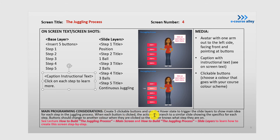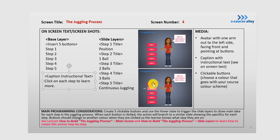When a button is clicked, the action will branch to a similar slide showing the specifics for each step. Buttons should change to another color when they are clicked, so the learner knows what step they're on. When they click on, for example, step one, it'll branch to the step one screen and it'll change color. I'm using blue, and they'll know they're on step one because the button is blue.